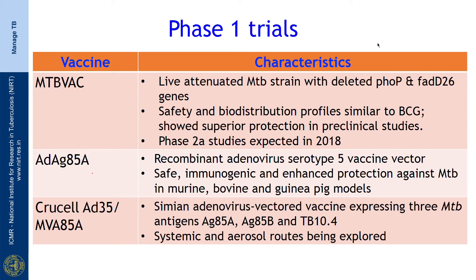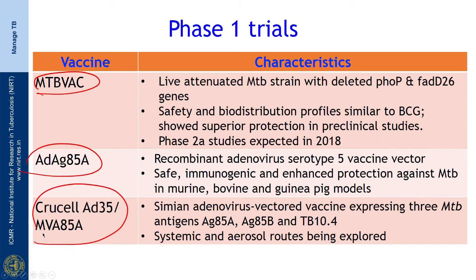Under Phase 1 we have 3 vaccines. The MTBVAC is a live attenuated MTB strain with depleted PhoP and FadD26 genes; safety and biodistribution profiles are similar to BCG and it shows superior protection in animal studies, with Phase 2a studies expected in 2018. The AdAg85A is a recombinant adenovirus type 5 vaccine vector that is safe, immunogenic, and enhances protection against MTB in murine, bovine, and guinea pig models. The ChAdOx1 MVA85A is a simian adenovirus vector vaccine expressing 3 MTB antigens — Antigen 85A, 85B, and TB10.4 — being investigated in systemic and aerosol routes, meaning this vaccine can be given by inhalation.